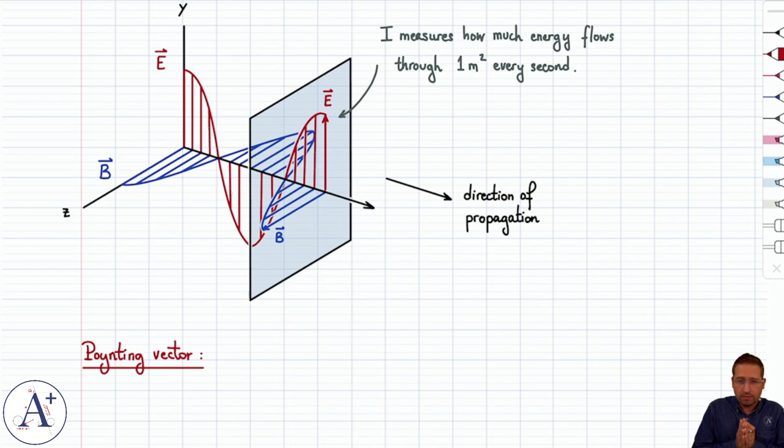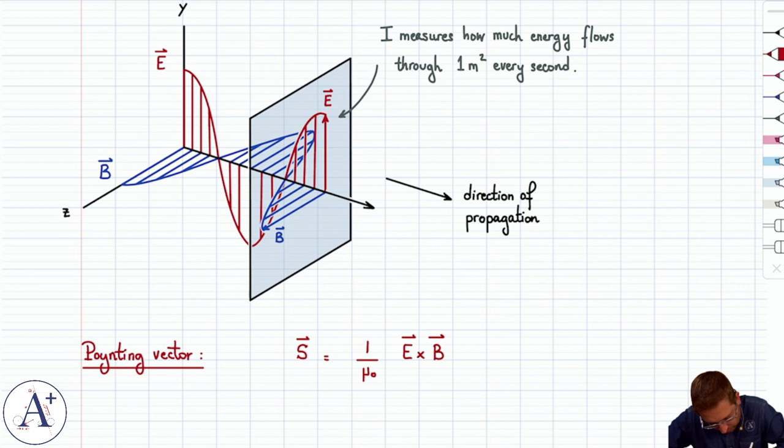Well, the Poynting vector is going to have two important quantities built into it. First is the direction of propagation, and second, its magnitude is going to be the intensity. We typically denote the Poynting vector by S. To make sure it points in the direction of propagation, it is going to be equal to E cross B, because an EM wave propagates in the direction of E cross B. And to make sure its magnitude is equal to the intensity, we're going to write 1 over μ₀ E cross B.